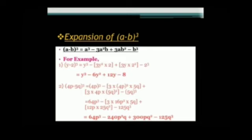For example, (x - 2)³. We assume A as x and B as 2, and must be very careful with the sign. According to the formula for (a - b)³: x³ - 3x² × 2 + 3x × 2² - 2³. So the solution for (x - 2)³ is x³ - 6x² + 12x - 8.